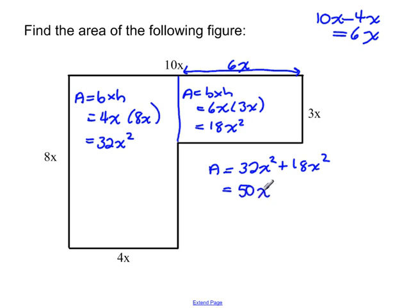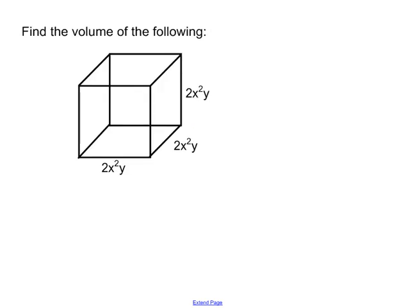This one here is a question involving volume, and this is a cube. How do we find volume of a cube? Well, we do side times side times side, or we can do side cubed. This is really just saying volume is equal to 2x squared y times 2x squared y times 2x squared y. They are exactly the same thing.